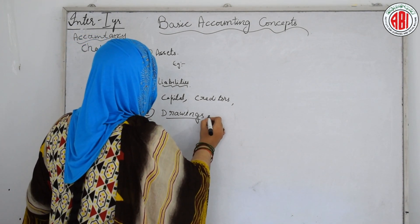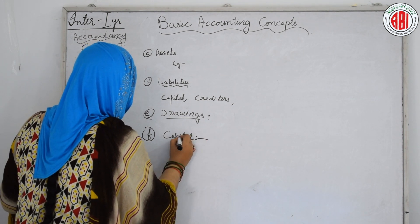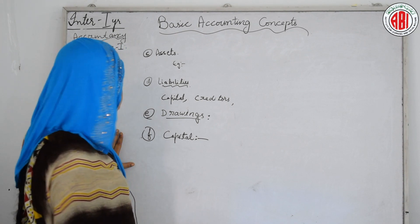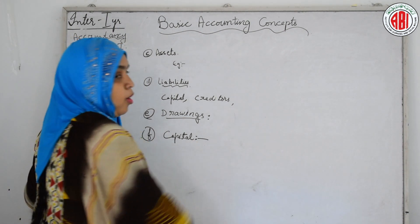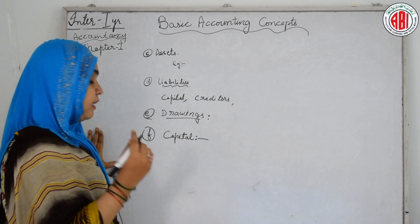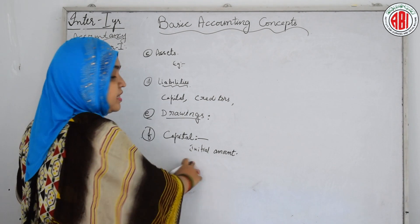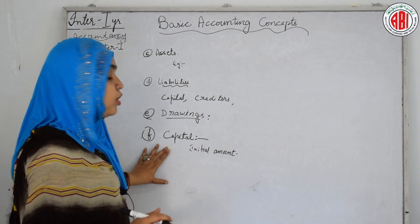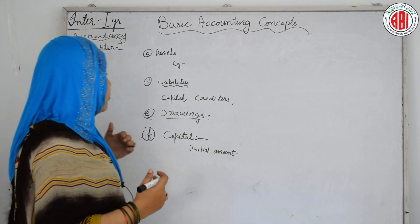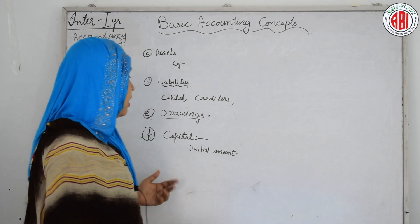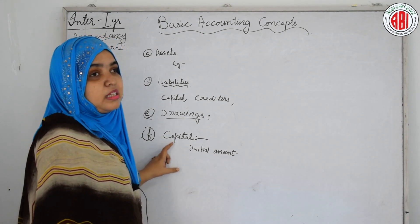Next is capital. For commerce students learning accounting, this term is very important. Capital is the amount with which the proprietor starts the business — it is called the initial amount. Without capital, a business cannot be started. The businessman, to earn profit and establish his business, has to start with capital — some initial amount, whether lesser or more.